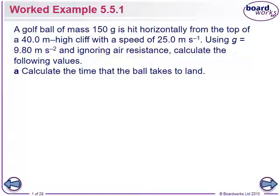A golf ball of mass 150 grams is hit horizontally from the top of a 40-meter high cliff with a speed of 25 meters per second. Using g equals 9.8 meters per second squared and ignoring air resistance, calculate the following values. Calculate the time the ball takes to land.